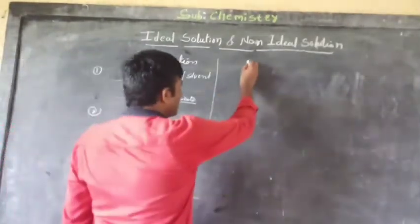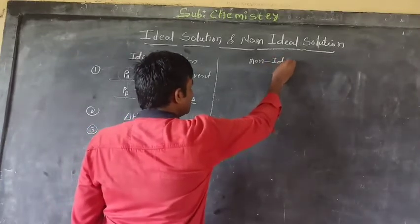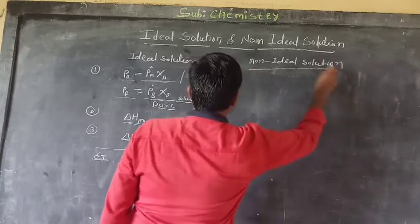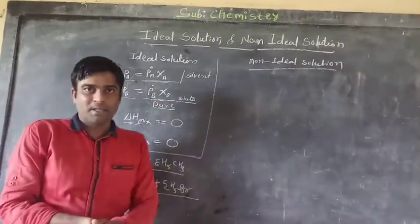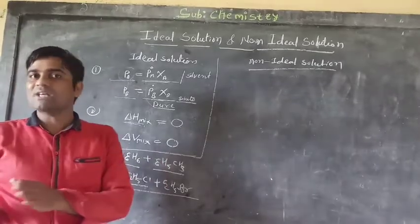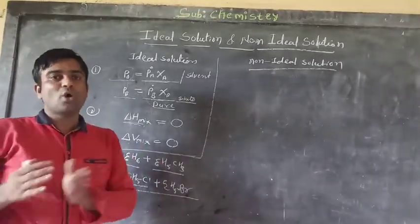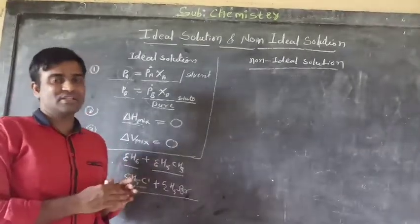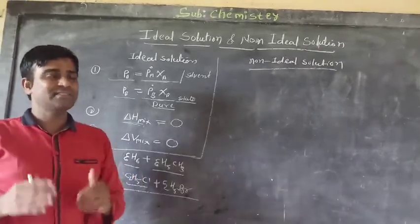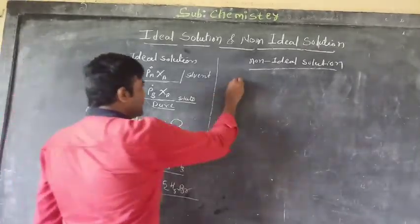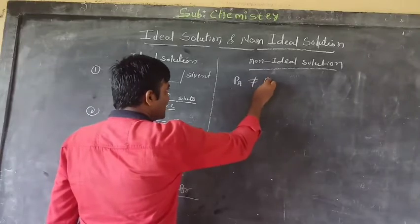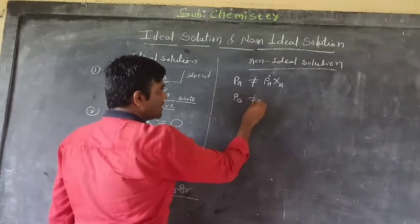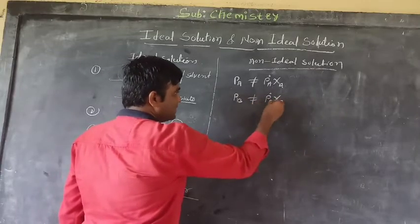Number two is Non-Ideal Solution. Non-ideal solutions are the opposite of ideal solutions. The solutions which do not obey Raoult's law exactly at all temperatures and all concentrations are called Non-Ideal Solutions. First condition: PA ≠ P°A · XA and PB ≠ P°B · XB.